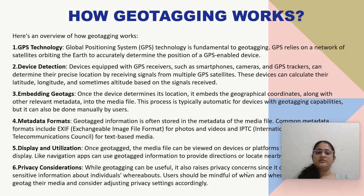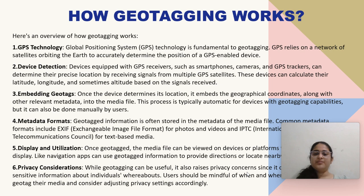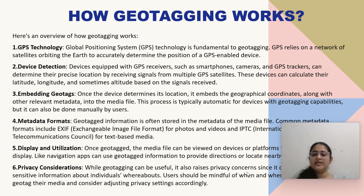How does geotagging work? First, let us see what GPS is, because geotagging basically works on GPS technology. GPS stands for Global Positioning System, and this technology is fundamental to geotagging. GPS relies on a network of satellites orbiting the Earth to accurately determine the position of a GPS-enabled device. Devices equipped with GPS receivers, such as smartphones, cameras, and GPS trackers, can determine their precise location by receiving signals from multiple GPS satellites, calculating their latitude, longitude, and sometimes altitude based on those signals.